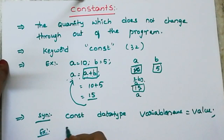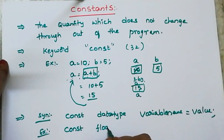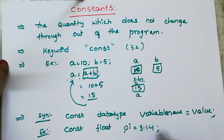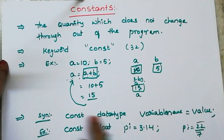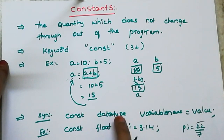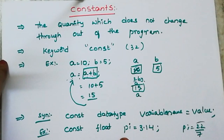For example: const float pi = 3.14. The actual value of pi is 22 divided by 7, which we represent as 3.14. Following the syntax: 'const' keyword, data type is 'float' because 3.14 is a floating point value, variable name is 'pi', and we assign the value equal to 3.14. So this is a constant declaration.